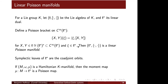This gives you a Poisson structure called a linear Poisson structure on little k-star. The key thing to know is that the symplectic leaves of this Poisson structure are the coadjoint orbits. K acts on little k by the adjoint action, and the dual action is the coadjoint action; the symplectic leaves are precisely the orbits under this action.